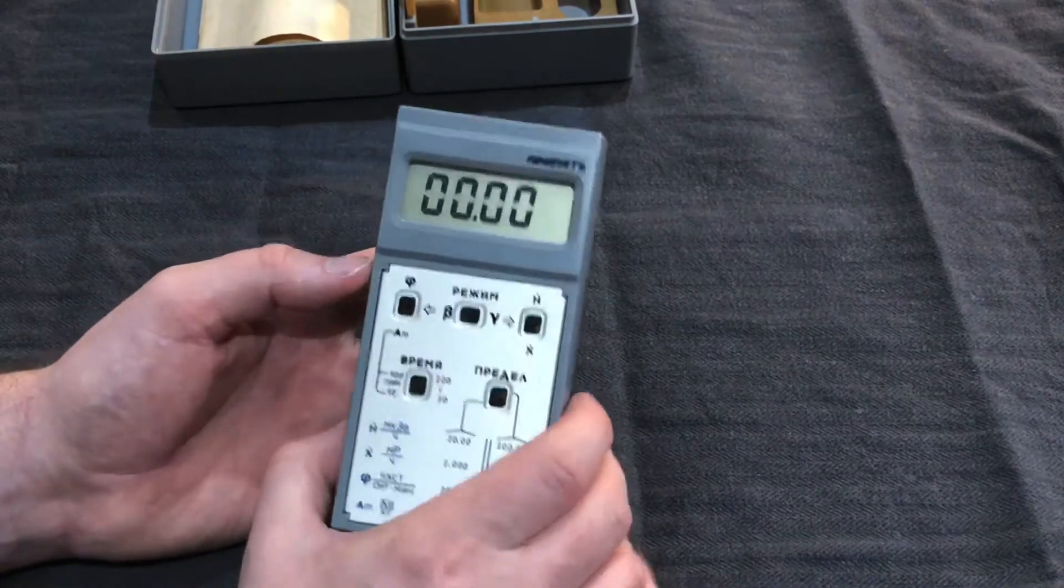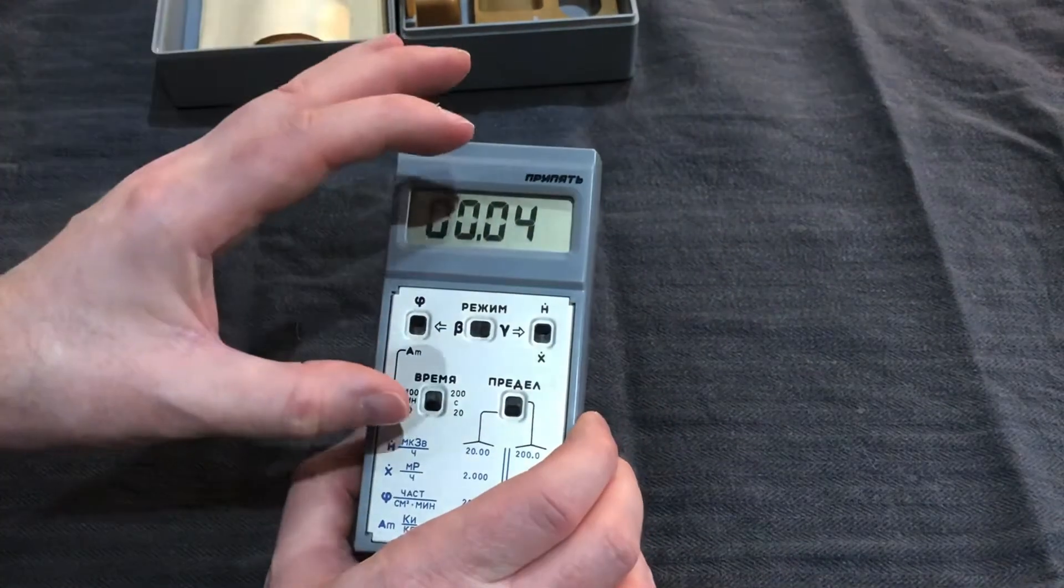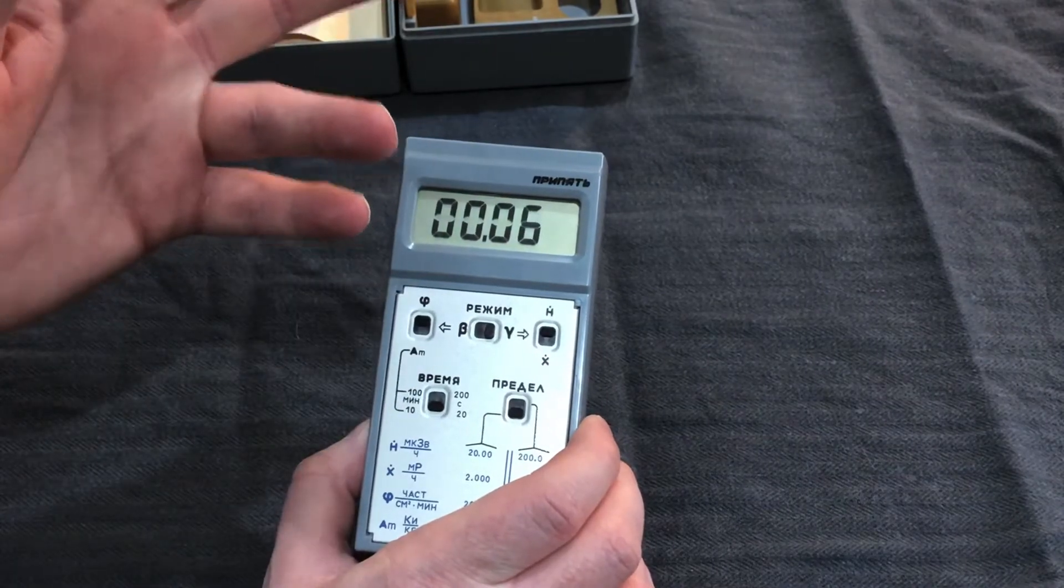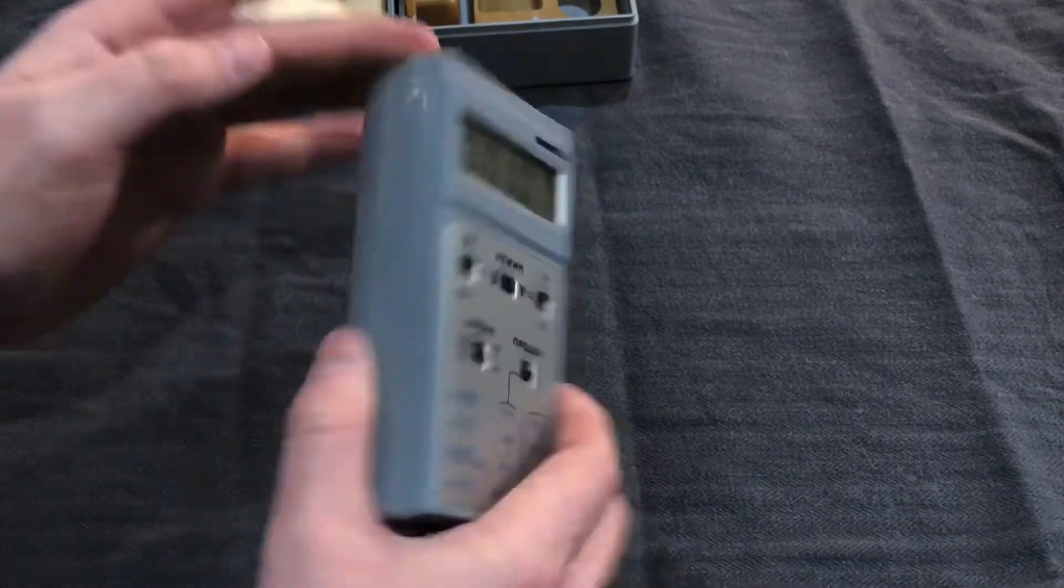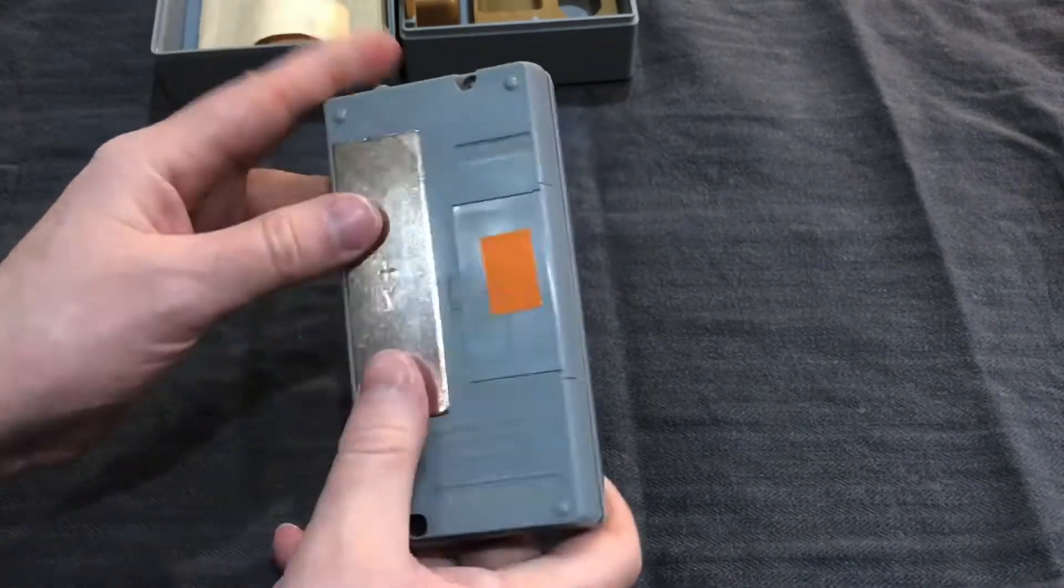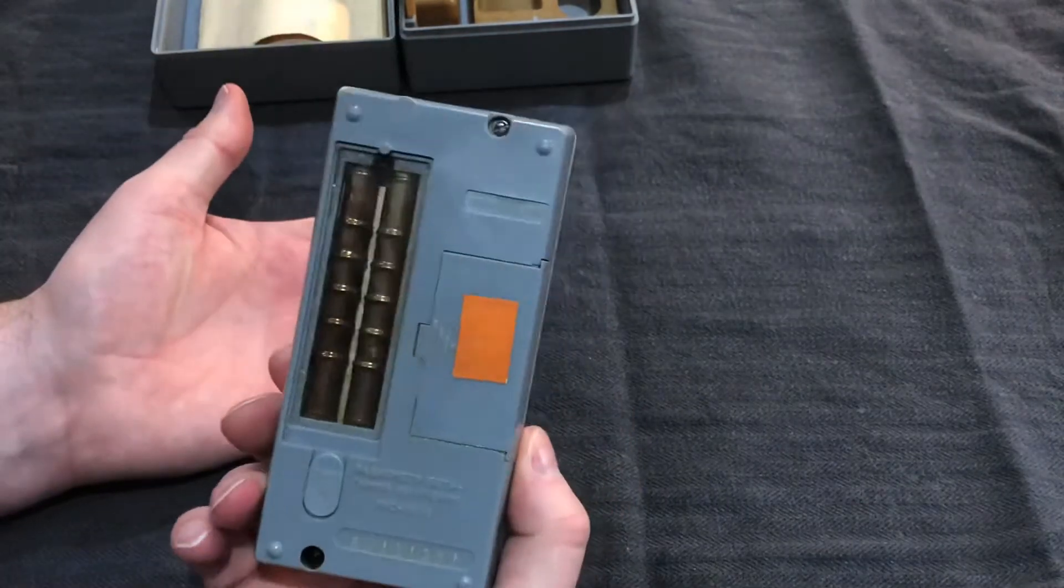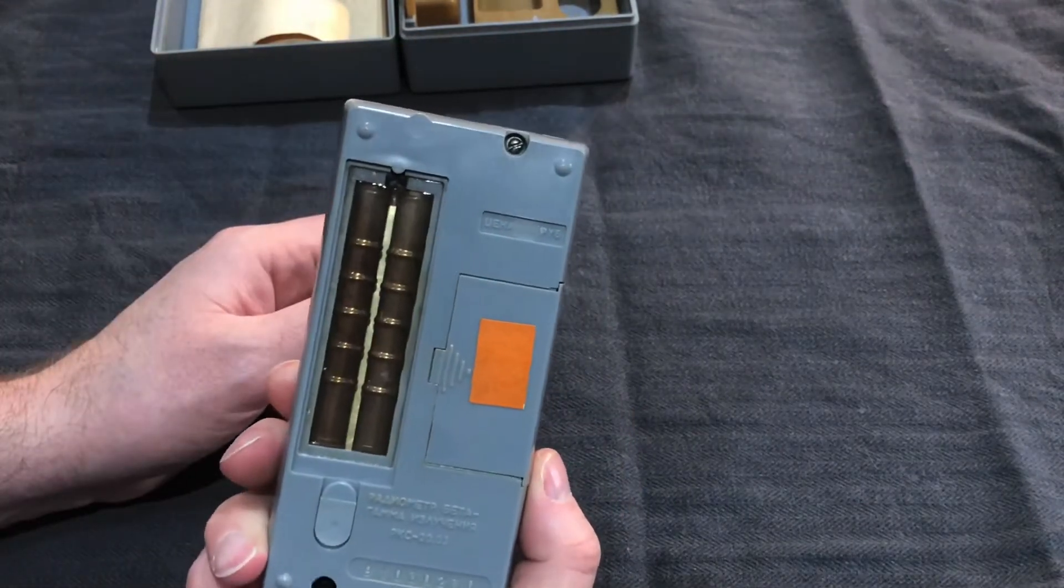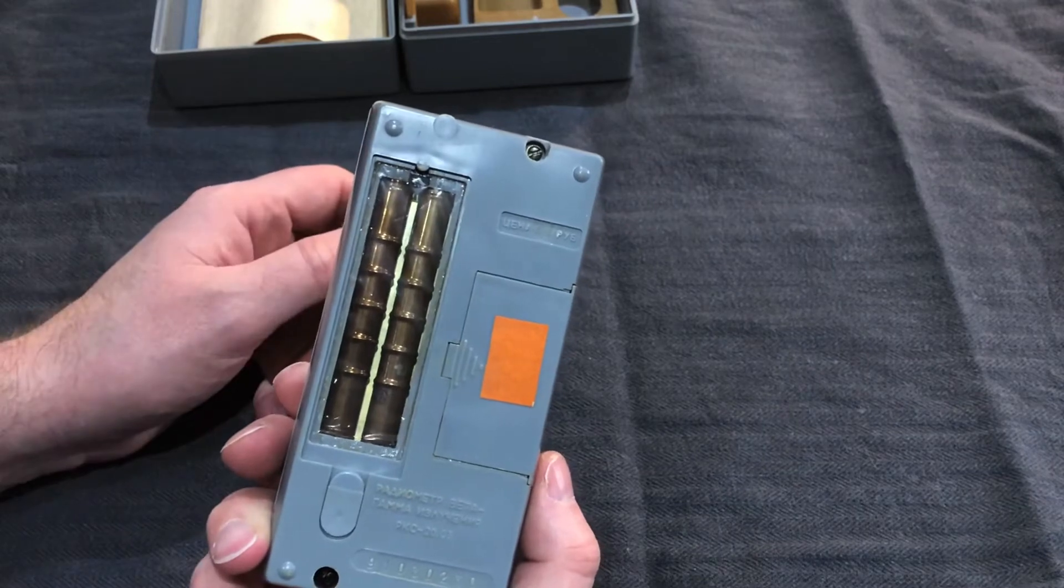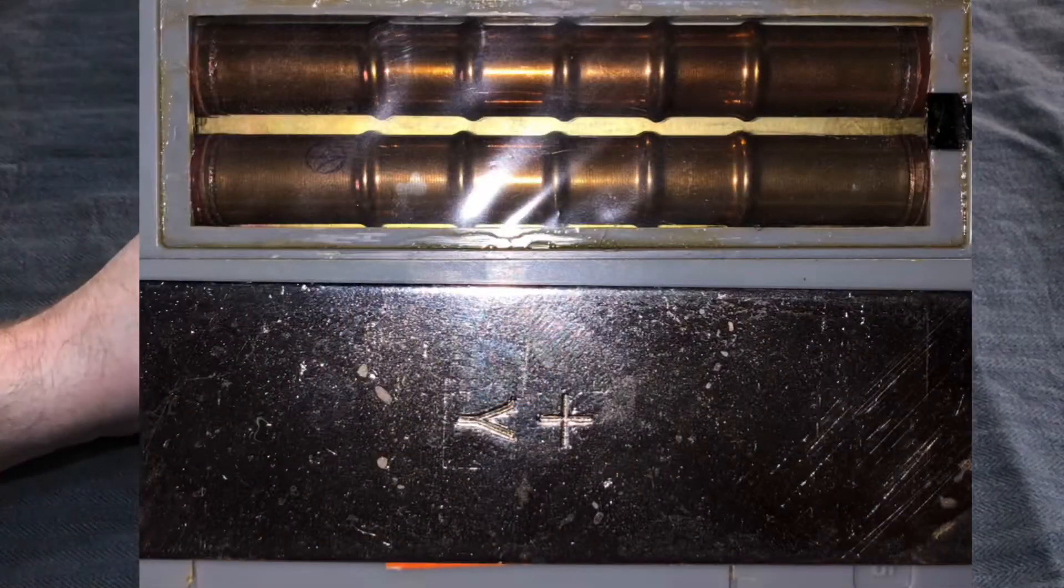So if I turn the unit on, it starts to count then instantaneously. At the moment obviously I have the gamma shield on. So if I take that off, you can see it's got twin SBM 20 tubes in there. Very sensitive tubes. I'll do a close-up on the screen of that now so you can see them.